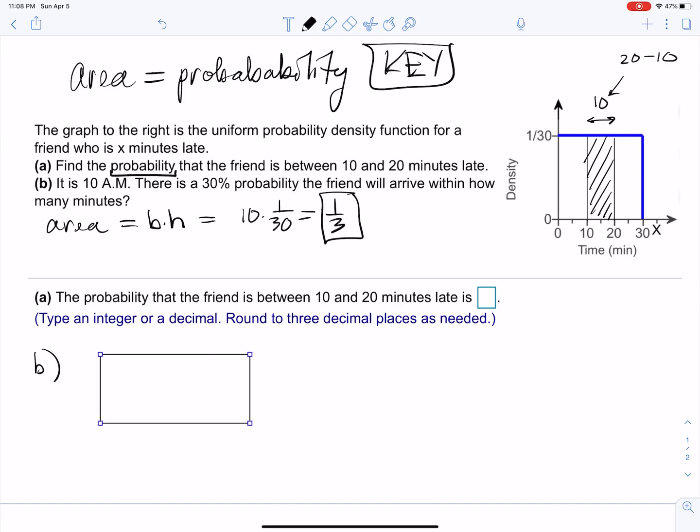Part b says it's 10 a.m., there's a 30% probability the friend will arrive within how many minutes. For this one, we can say that this is zero, this is 30, and now we can say, okay, where's 30% of this? That's about a third of it. We don't know this time limit, but what we do know is that the height is 1 over 30.